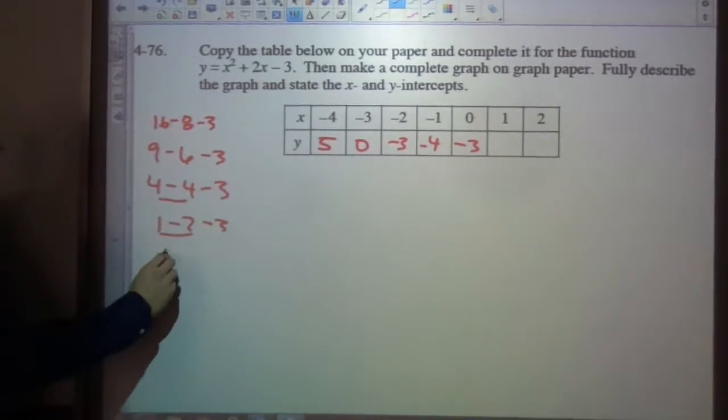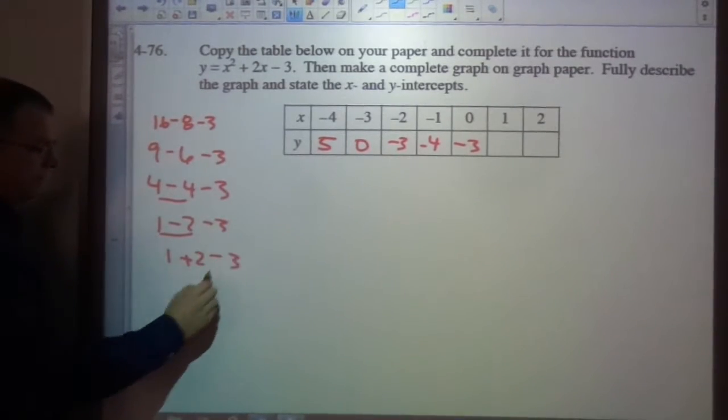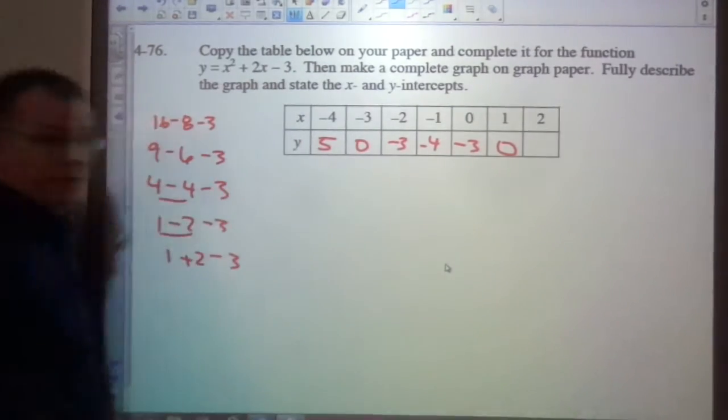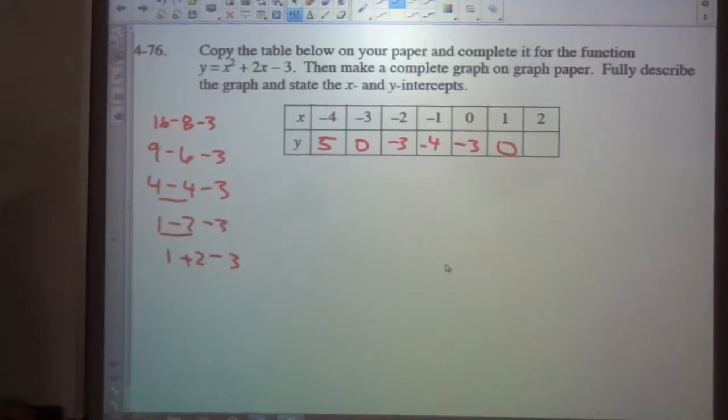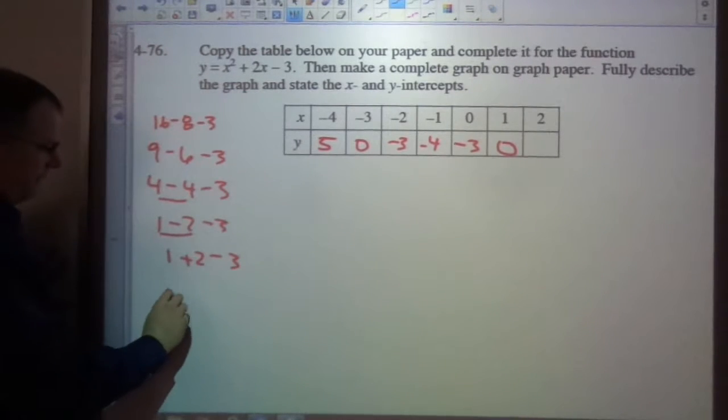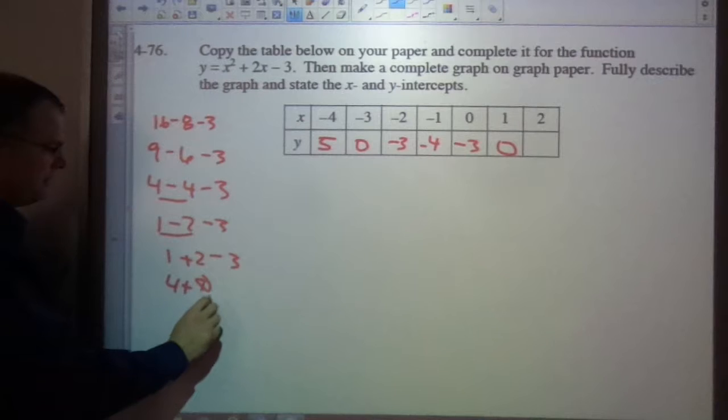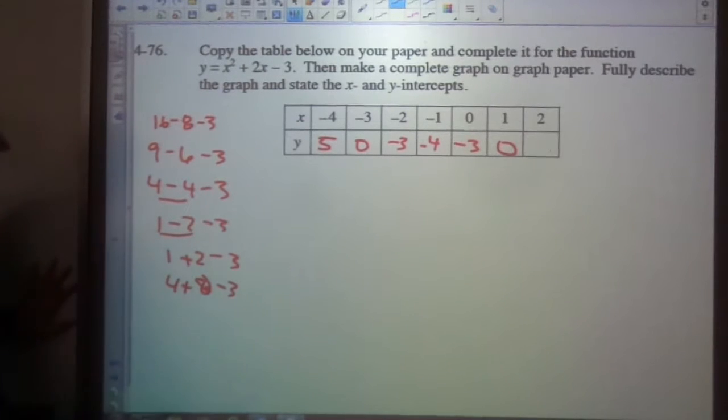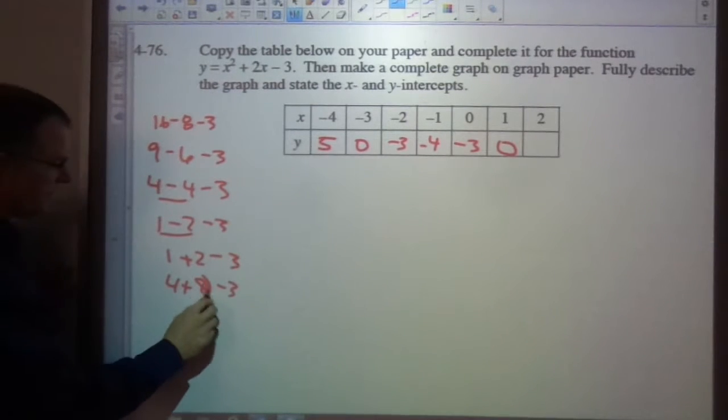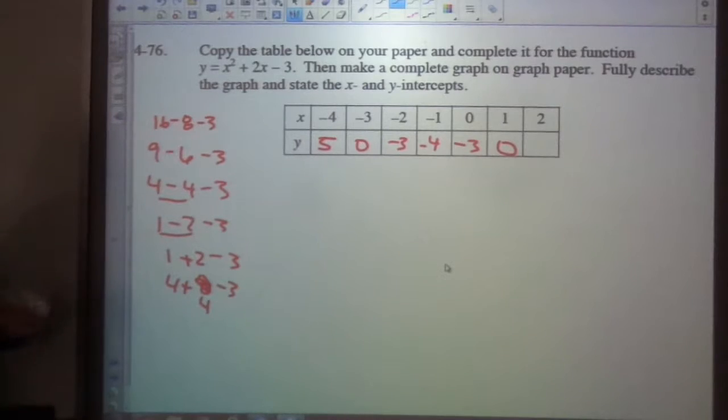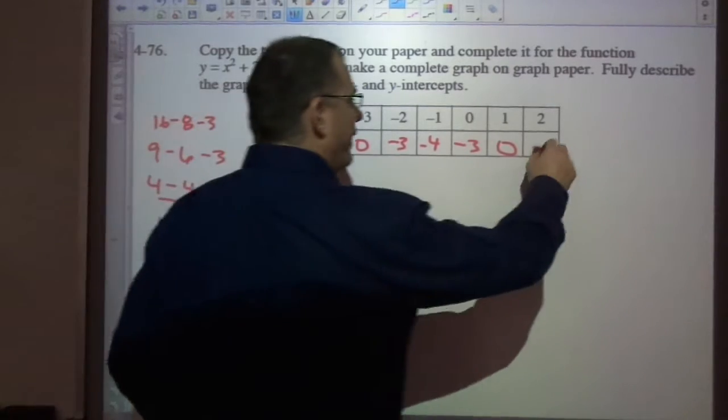1 plus 2 minus 3, that's 0. Do you notice a trend? Do you want to make a guess what the last number is? 5. Yeah, 2 squared is 4 plus 8 minus 3. Oh wait, no no, 4 plus 4 minus 3. That's 8 minus 3 which is 5.